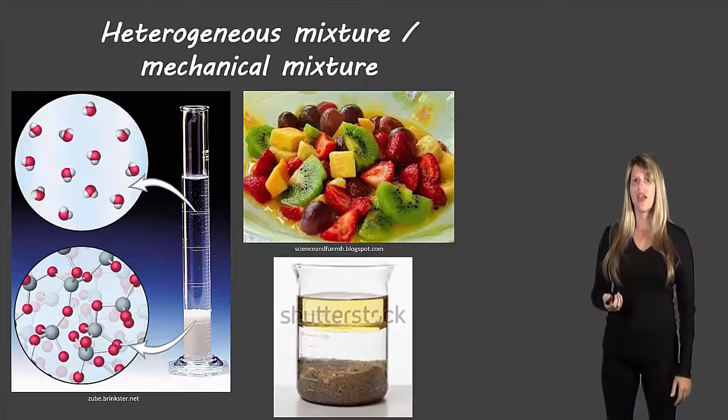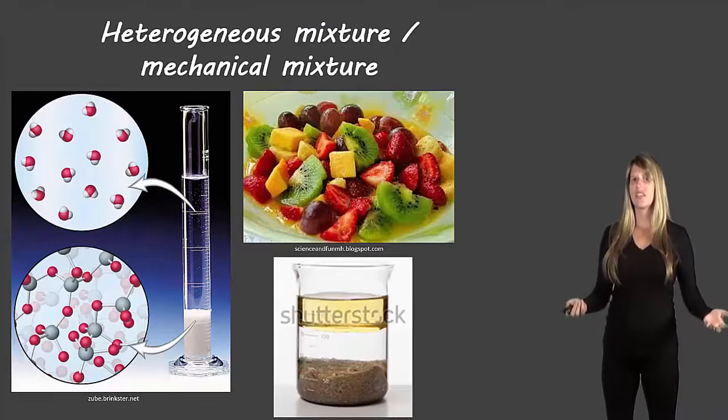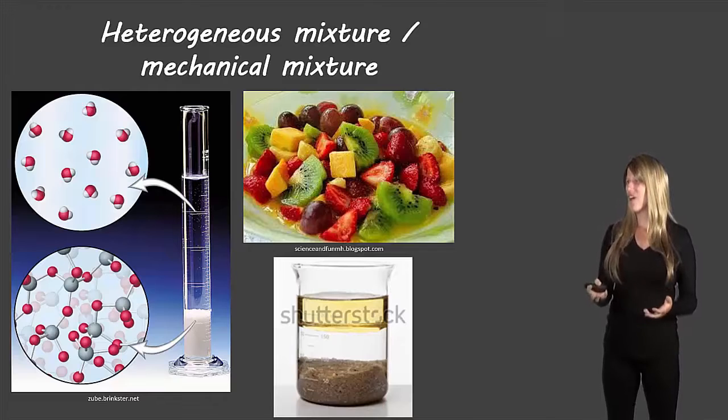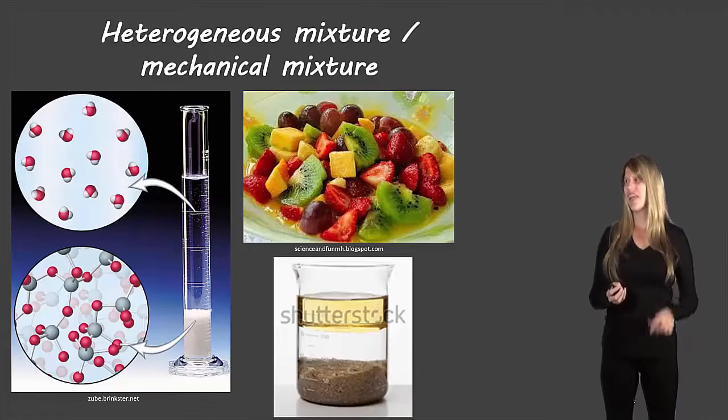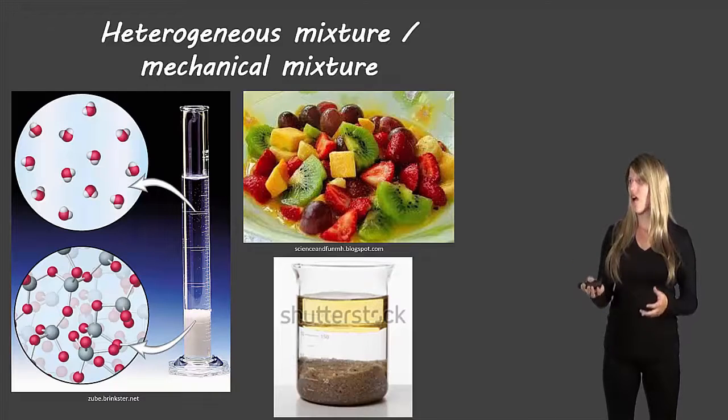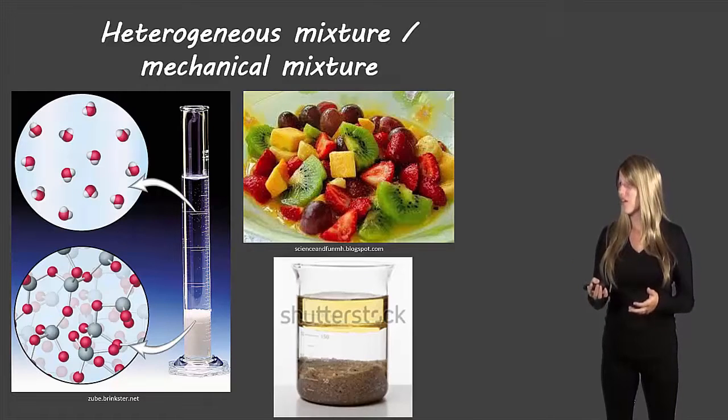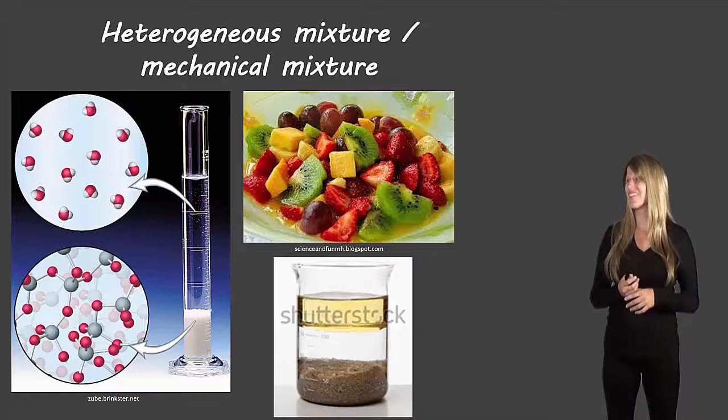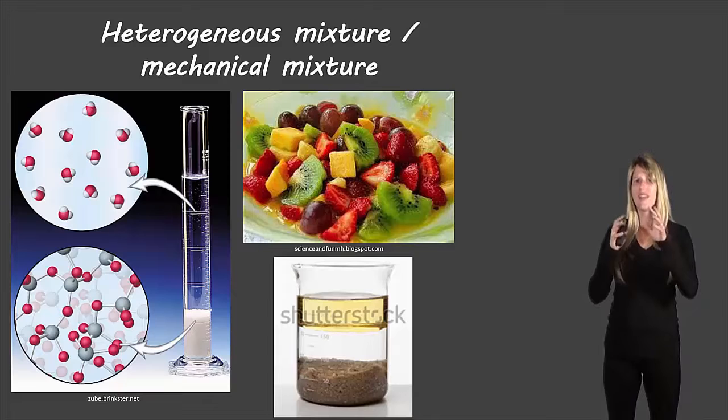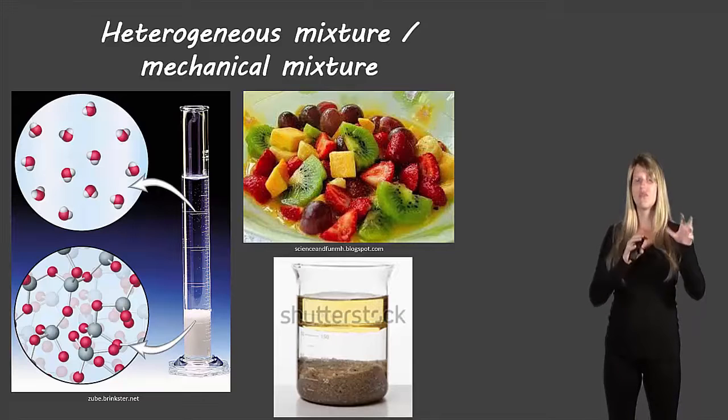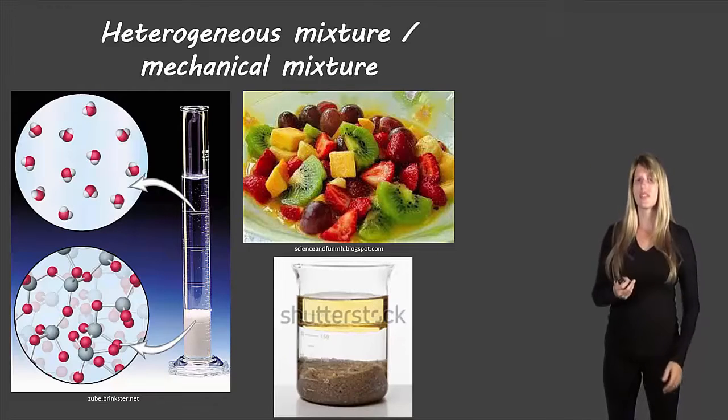So here's some examples of heterogeneous mixtures. Fruit salad, you can see all the different pieces of fruit. Oil, water and it looks like sand. You can see three distinct layers. And then we've got what looks like oil and some type of sugar compounds or some sort of organic compound in the bottom of that graduated cylinder. And you can see the water when you zoom in, you can see the original water molecules. And then with the other compounds at the bottom you can see those molecules but the two are not mixing together.